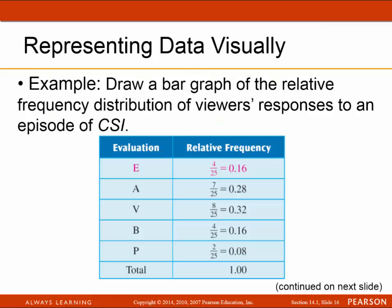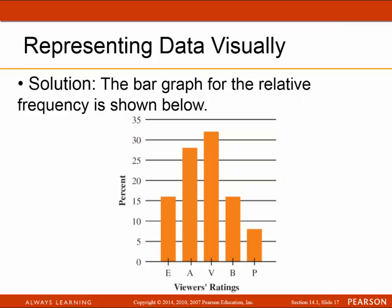Next we do a bar graph of the relative frequency. It's really the same bar graph, except the vertical axis now shows percent. It goes from 0 to 35%, consistent with the scale going up by 5. Again, the bars are the same width.